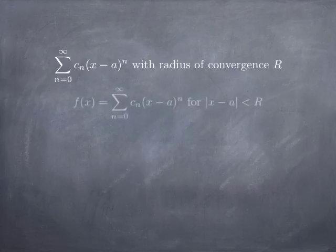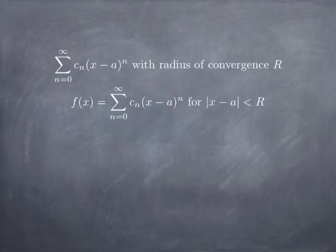Then on the interval of convergence, and more specifically throwing out the endpoints on the open interval of convergence, we have absolute convergence of the series. Therefore, for each x, the sum of the series defines a value f(x), so that defines a function f(x) on that open interval.